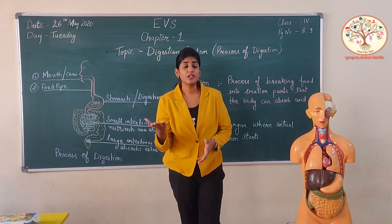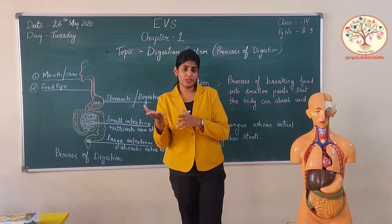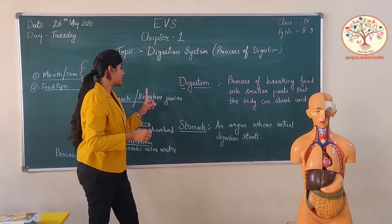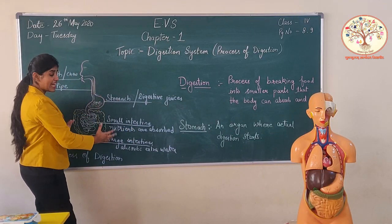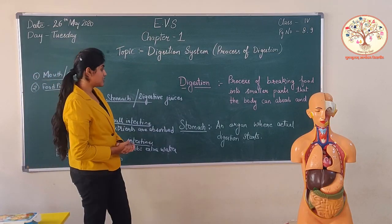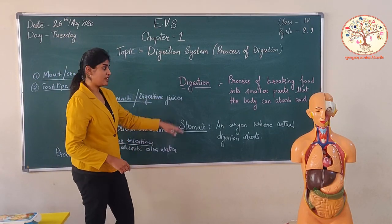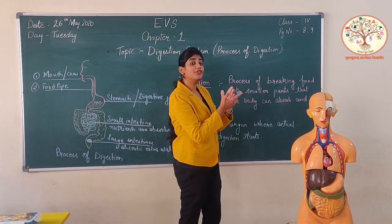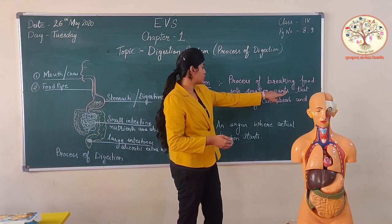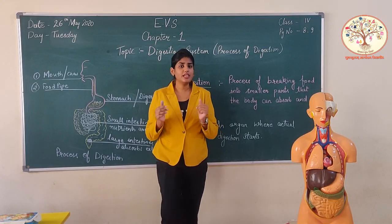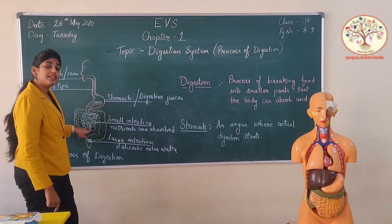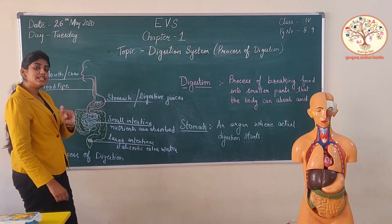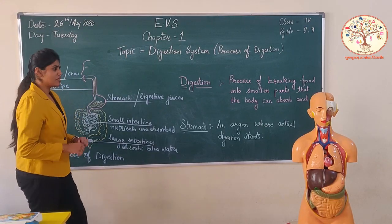The food item that we took is totally changed — why? Because it is broken into very smaller pieces inside our digestive system. This is the process of digestion. What is digestion? It is the process of breaking food into smaller parts so that our body can easily absorb it. Our body is able to absorb the nutrients because the food particles are broken into small pieces.